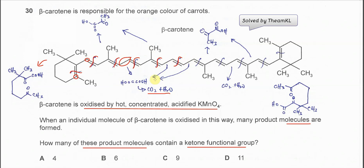If this bond breaks, this part will form CO2 and H2O. Similarly, this bond and the next bond breaking also produce CO2 and H2O. If this bond breaks, it will form this part, which further oxidizes to form this molecule — the same molecule as before. These carbons will oxidize to form a ketone, and this carbon will form a carboxylic acid.